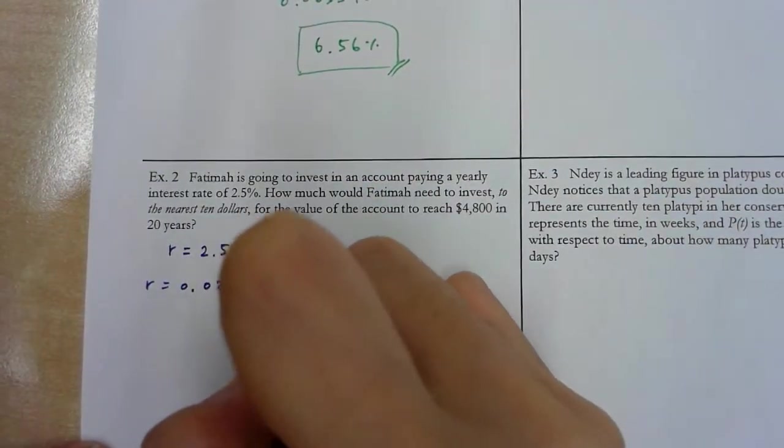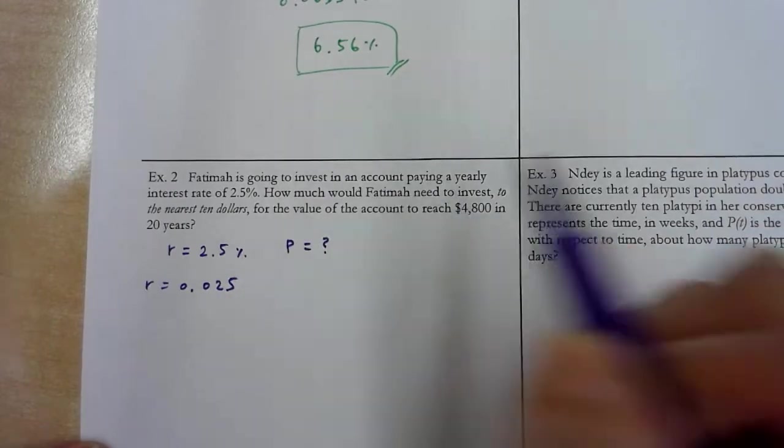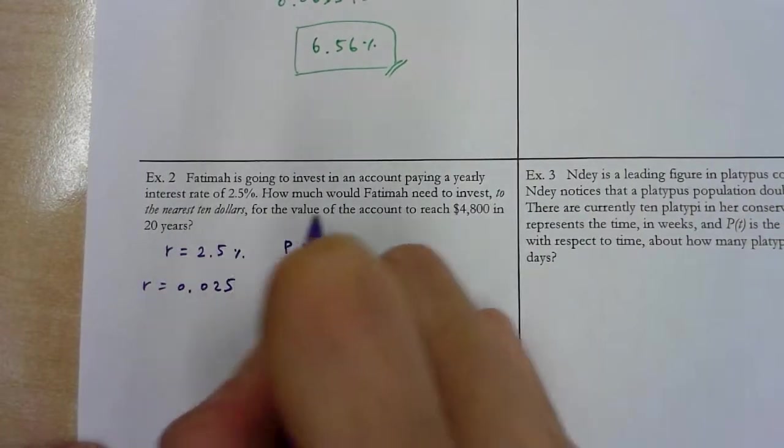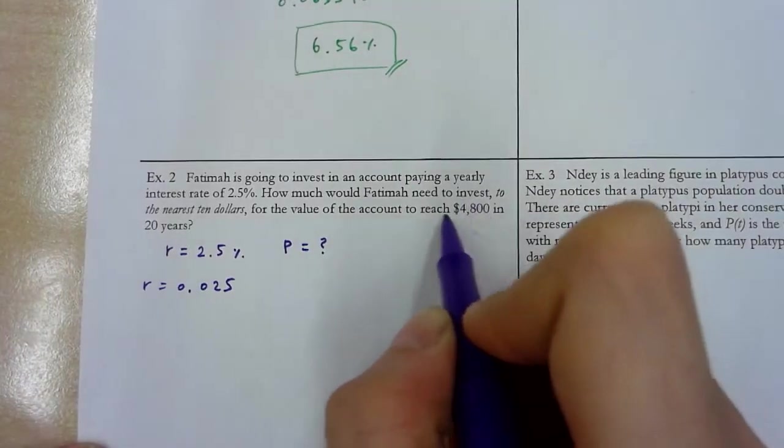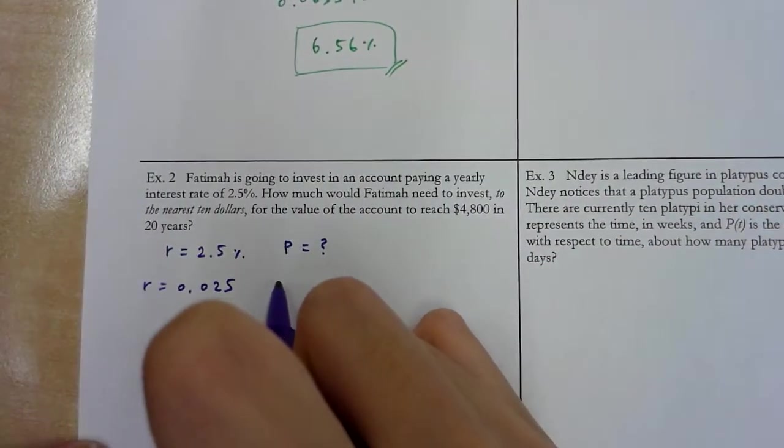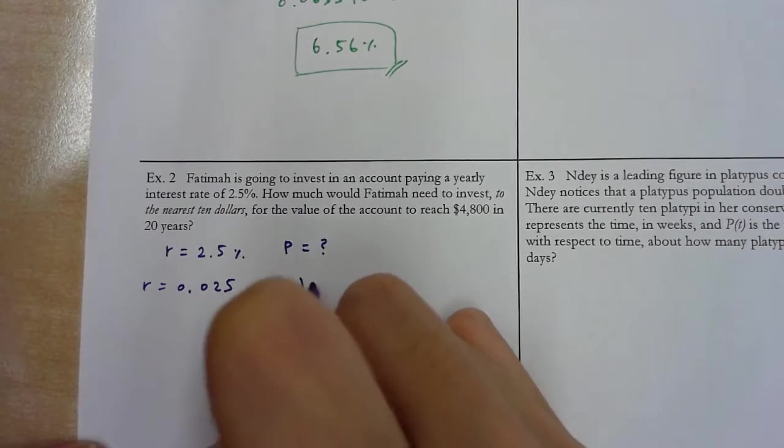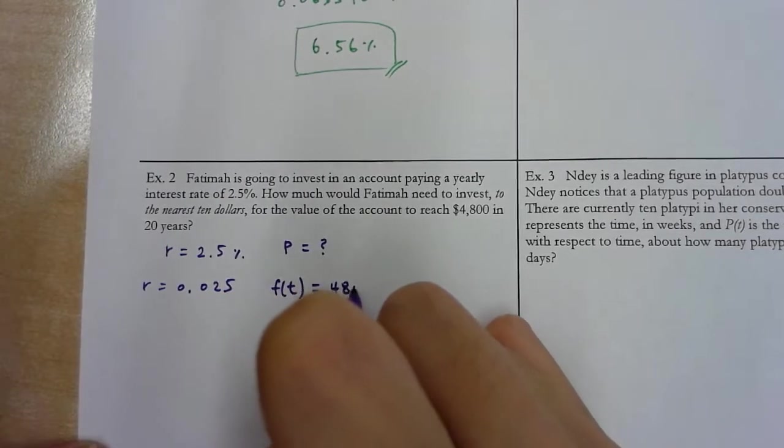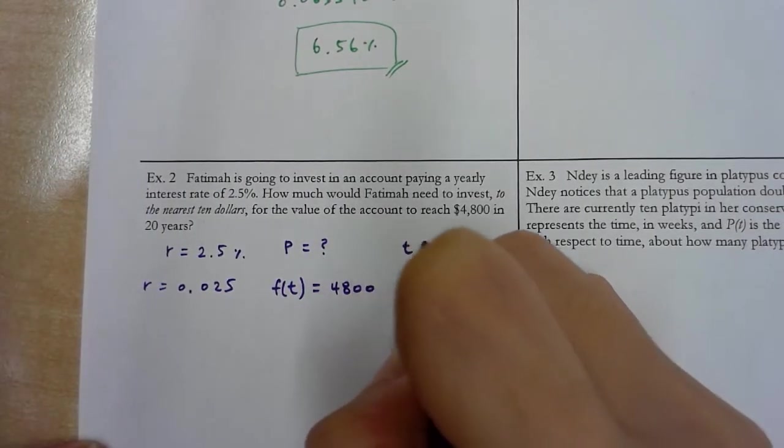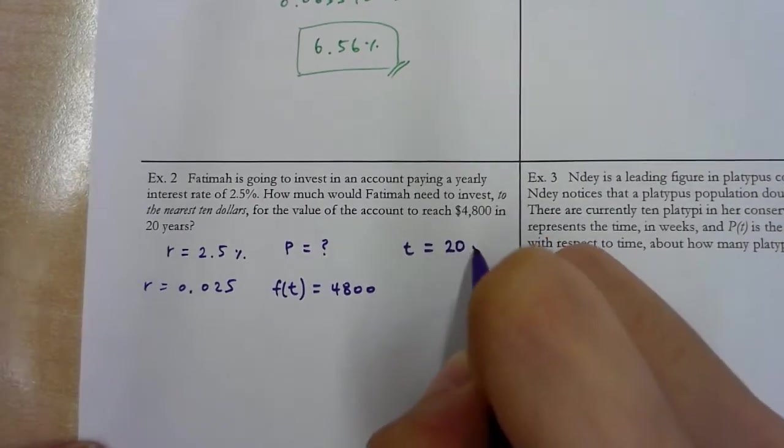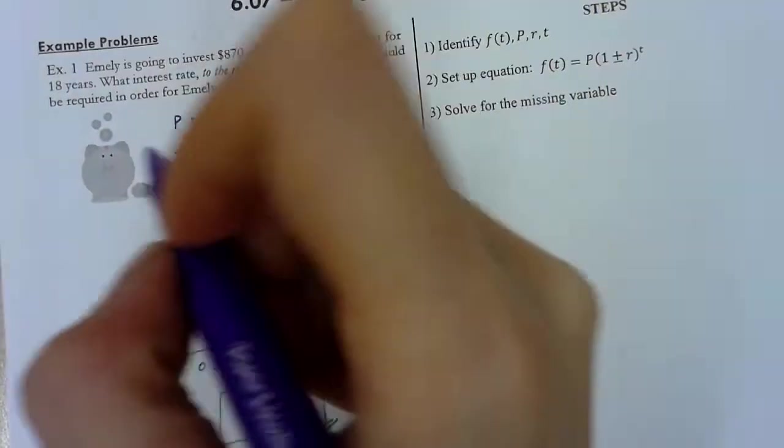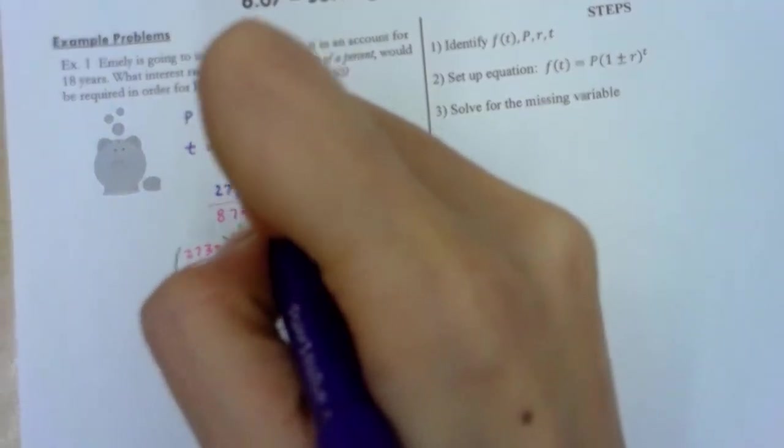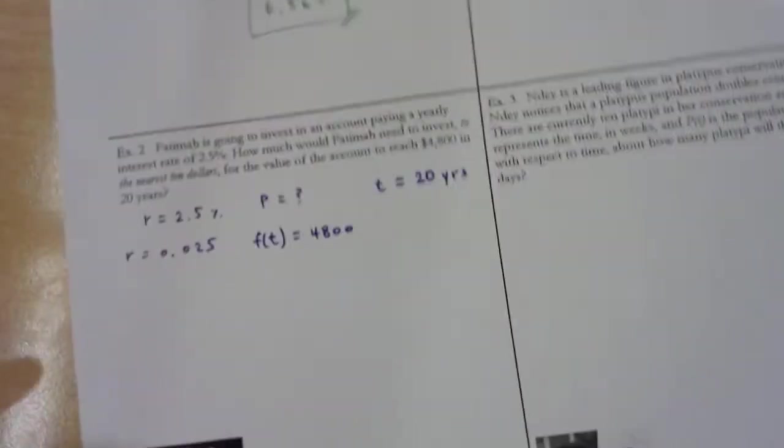And then how much would the team need to invest? So we don't know what P is. And let me see. Count to reach. So we want to end up with this balance, right? So that actually is f(t). And actually they say in 20 years. So there we go. t is 20 years. Let me put the units down. Because sometimes problems get trickier with the units.